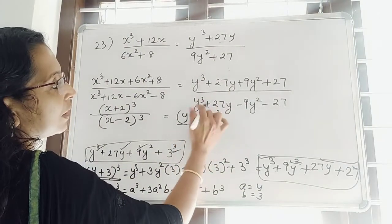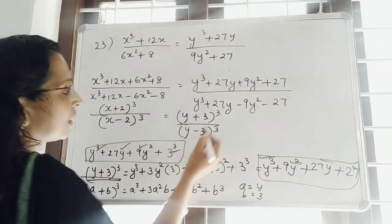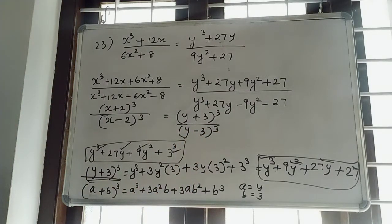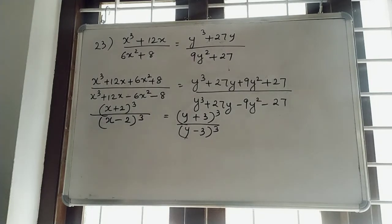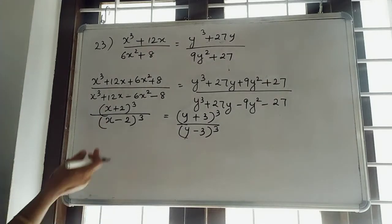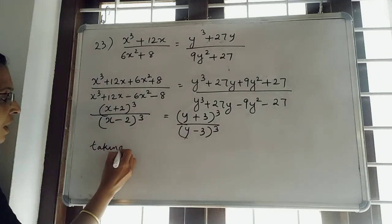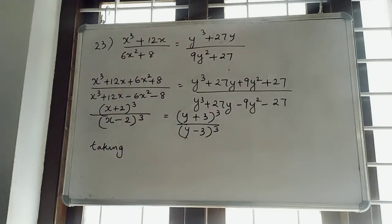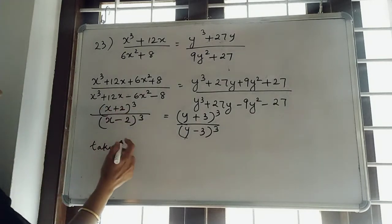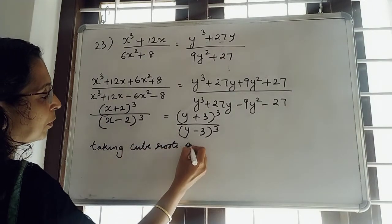Same thing — instead of plus we want minus. So (y − 3)³ will be the denominator of RHS. Already we discussed: wherever we see the cube, we want to take the cube root. So, taking cube roots on both sides.